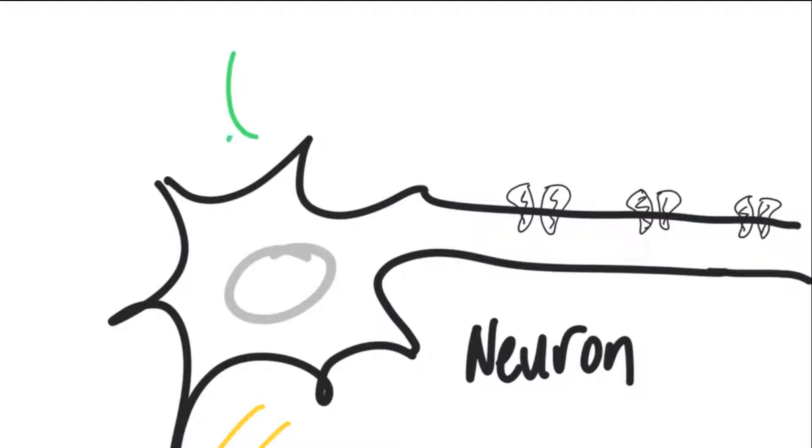Whenever there's any kind of stimulus, the ion channels will open and allow positive ions to flow through. This creates a chain reaction that causes an electrical signal to run down the axon, and this is called an action potential.